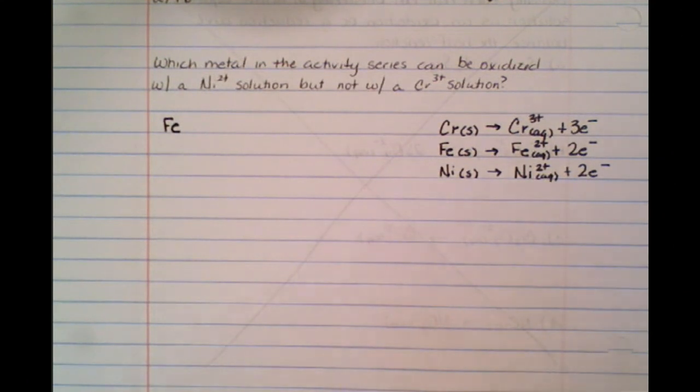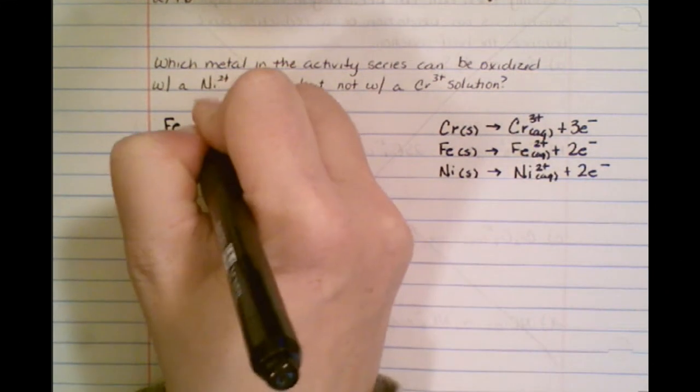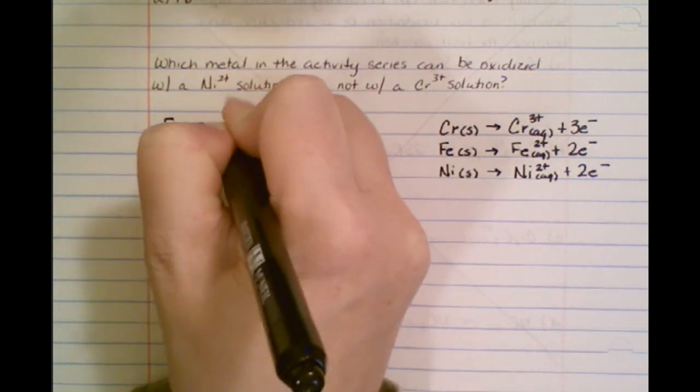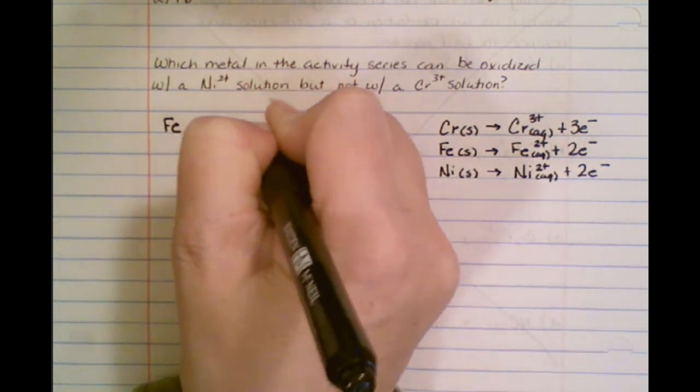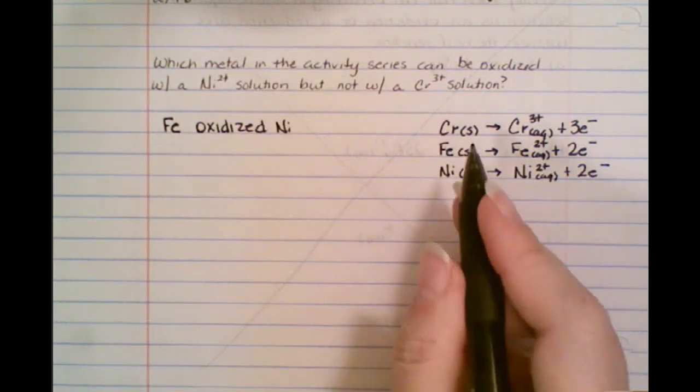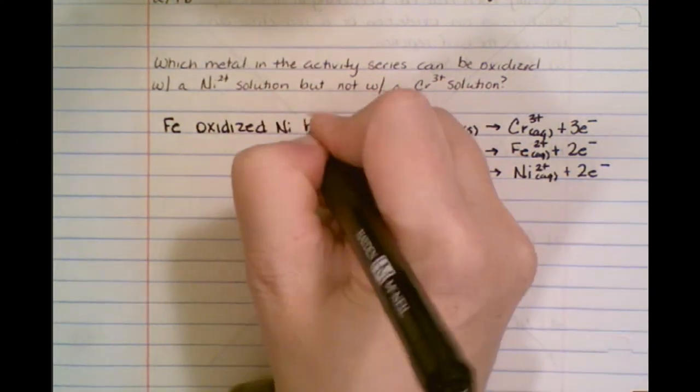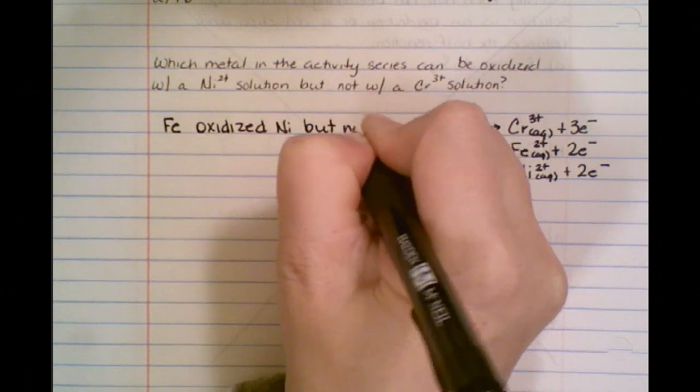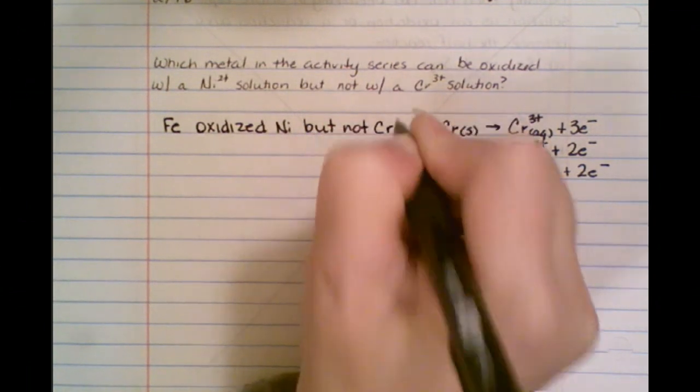So we're saying that iron can oxidize nickel. So if it can oxidize the nickel, it cannot do what? It cannot oxidize the chromium.